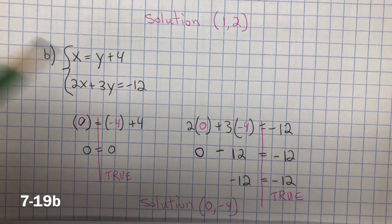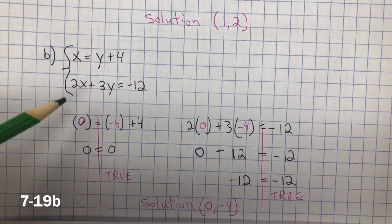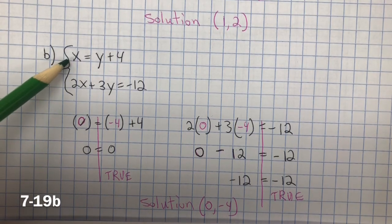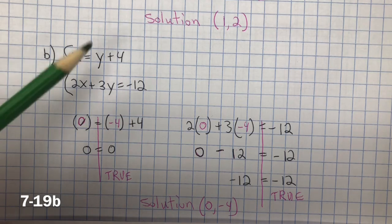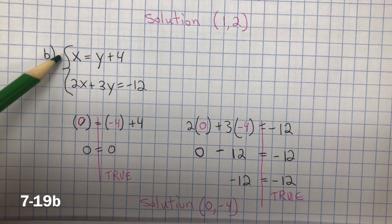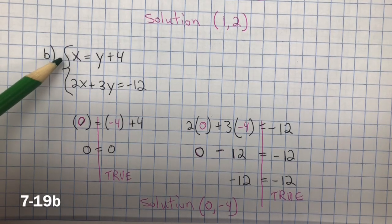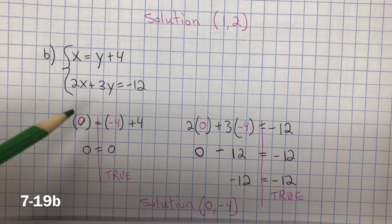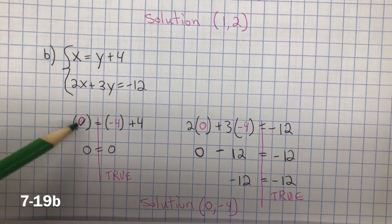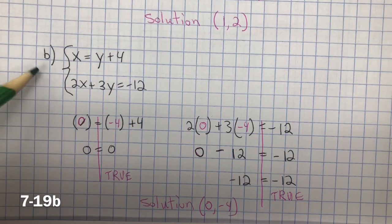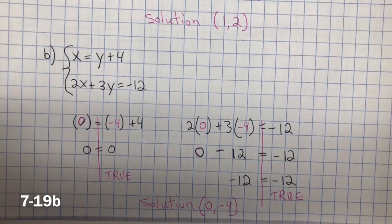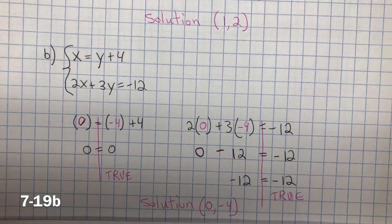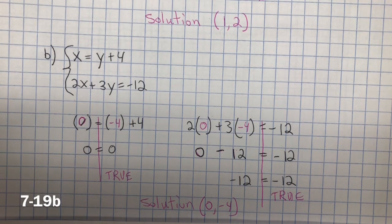The reason why I chose the substitution method, instead of setting them both equal to slope intercept form, y equals mx plus b, is I only had three solutions already given, so I thought it would be faster to do it this way. If you want to put them into slope intercept form and set them equal to each other, that's a great way of doing it as well.